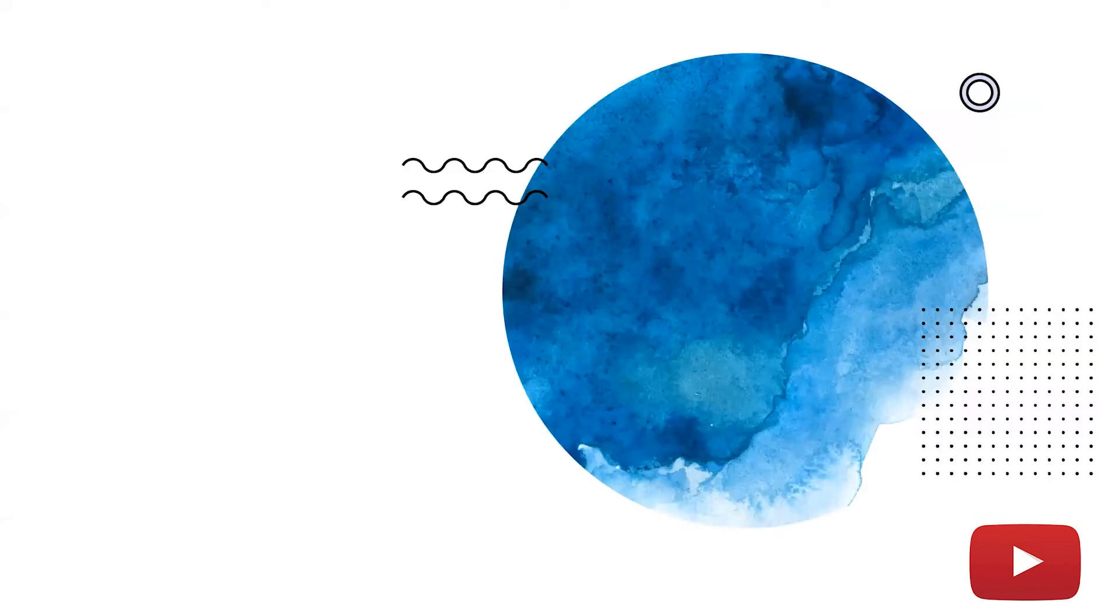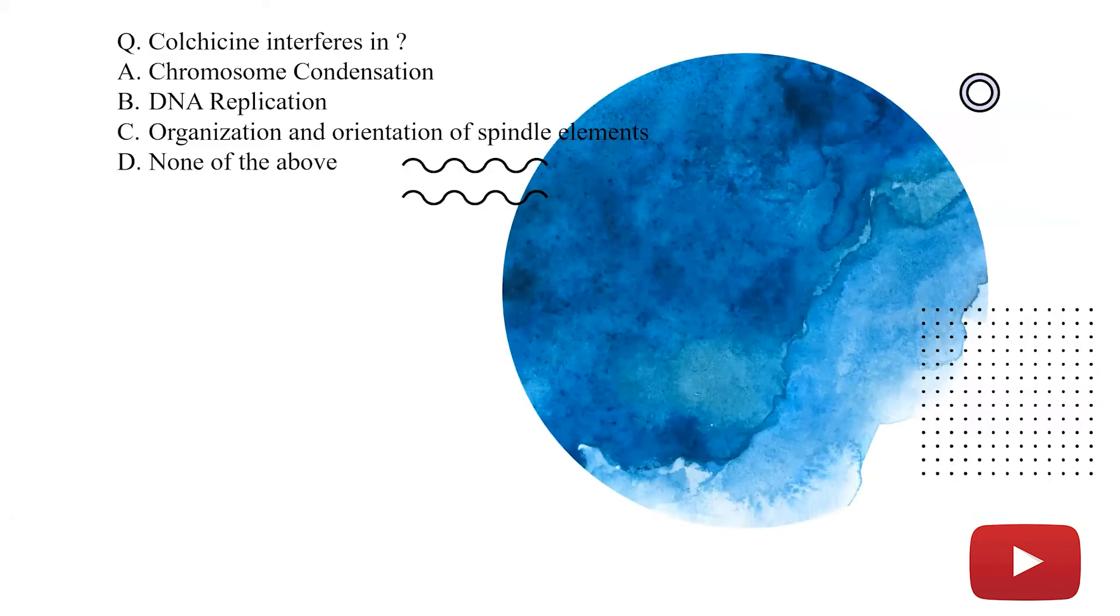Now, we are discussing some questions. First, colchicine interferes in A. Chromosome condensation B. DNA replication C. Organization and orientation of spindle elements And D. None of the above. Answer kya ho sakta hai? We have seen that colchicine is in spindle formation ko rokti hai. Yarni ki, kaha interfere karegi? Organization and orientation of spindle elements mein. Answer kya ho ga humara? Answer C.